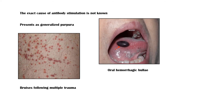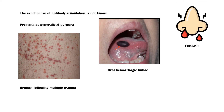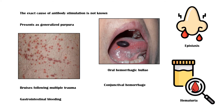Children with ITP typically present with generalized purpura, as you can see in this picture. Other presenting features may include bruises following multiple trauma, oral hemorrhagic bulla, epistaxis or nose bleeding, gastrointestinal bleeding, conjunctival hemorrhage, and hematuria, or blood in urine. It is important to know that splenomegaly is not seen in immune thrombocytopenic purpura.